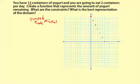Okay, so we have 12 containers of yogurt. That's the initial amount and two containers per day. For each day you're taking away two containers of yogurt because you're eating them. So your rate is negative two. So negative two x plus your initial amount is 12.